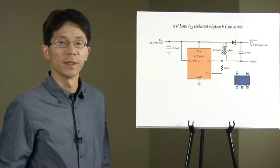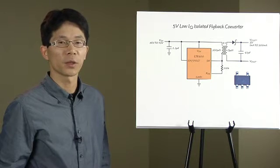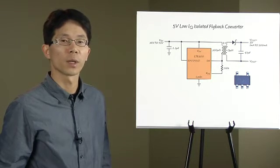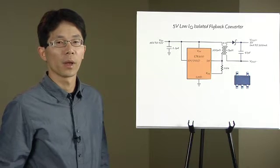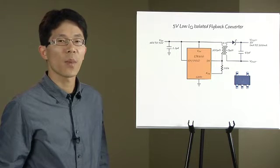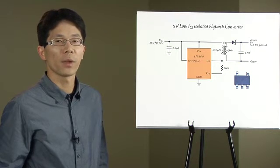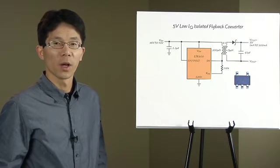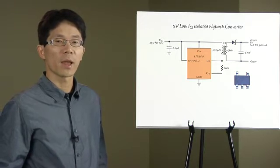The output voltage is easily set by a single external resistor and transformer turns ratio. The LT8300 features low quiescent current, 70 microamps in sleep mode and 330 microamps in active mode, which greatly improves light load efficiency.